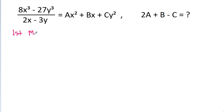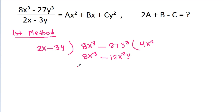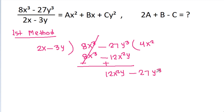The first method is we have to divide 8x³ - 27y³ by (2x - 3y). 2x times 4x² is 8x³ and minus 3y times 4x² is -12x²y. The sign will change, 8x³ will get cancelled, and it becomes 12x²y - 27y³.